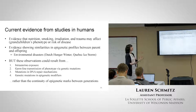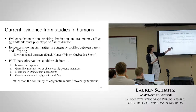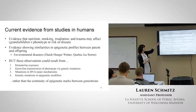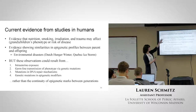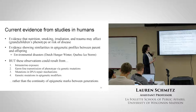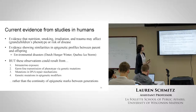Current evidence: yes, there is evidence that nutrition, smoking, trauma, etc. could affect the grandchildren's phenotype or risk of disease. There's evidence showing similarities in epigenetic profiles between parent and offspring, even with causal studies like the Dutch Hunger Winter and the Quebec Ice Storm. But these are still not showing transgenerational epigenetic inheritance because they're not showing it across the required generations - many times these results are actually from intrauterine exposure. There can be genetic mutations, mutations in DNA repair mechanisms, genetic mutations in epigenetic modifiers - a lot of things these studies are not taking into account. So they can't really make the claim that it's transgenerational epigenetic inheritance.